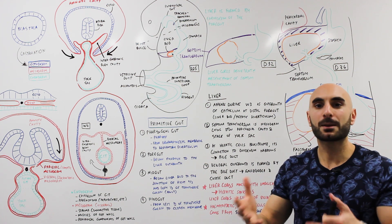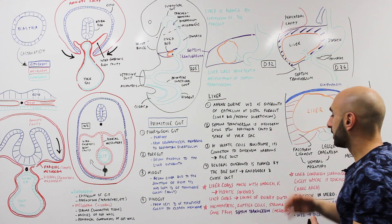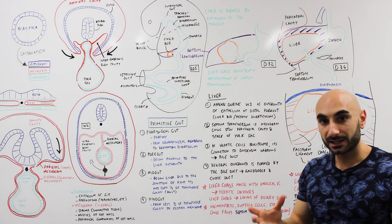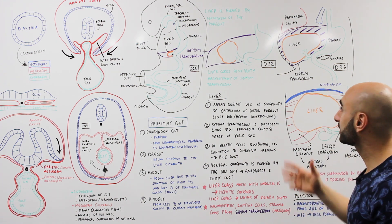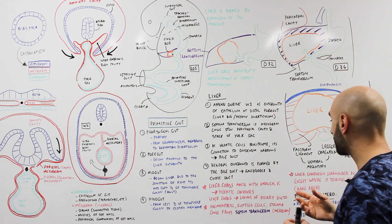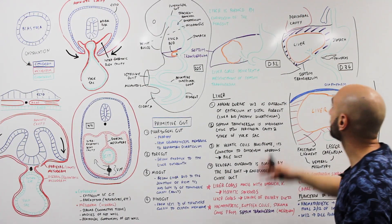Initially in utero life, one of the main functions of the liver is to make red blood cells, white blood cells, hematopoietic function. So the liver cords actually intermingle with the umbilical vein and these will form the hepatic sinusoids, and then the liver cords themselves become the lining of the biliary ducts.